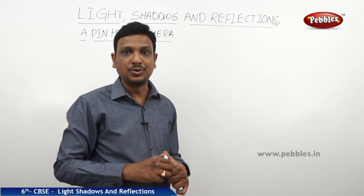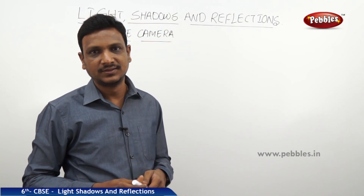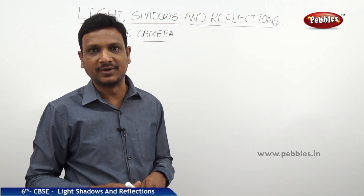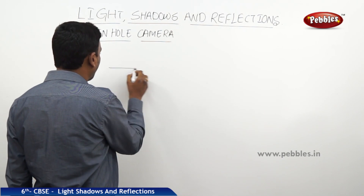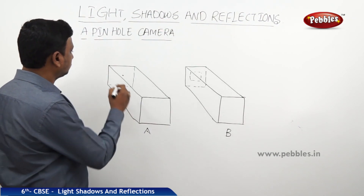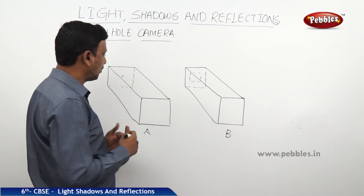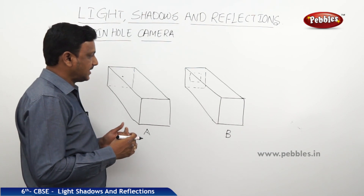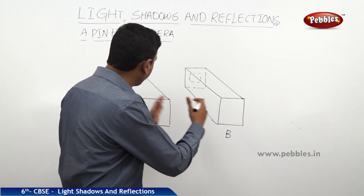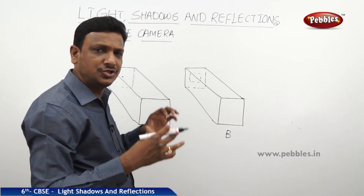You can cast the image of an object onto a screen. Let us see how to make this pinhole camera and get the images of objects into your camera. You need to take a cardboard box. Here we have taken a rectangular hollow cardboard box, and one more cardboard box which is smaller in size — the smaller one fits into the bigger one. Make sure that when you fix the smaller one in the bigger one, there should be no gap; it should be tight.